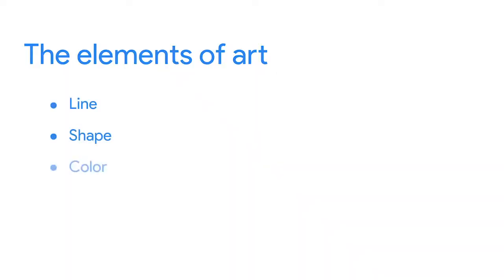You probably didn't think you'd be learning about art in a data analytics course, but that's exactly what we're going to do. Both data analysts and artists use elements of art in their work. We'll introduce those elements to you here and show you how to apply them to visualizations later. The elements we'll check out are line, shape, color, space, and movement. These aren't the only elements to consider, but these particular ones can add value to your data viz by making them more visually effective and compelling.